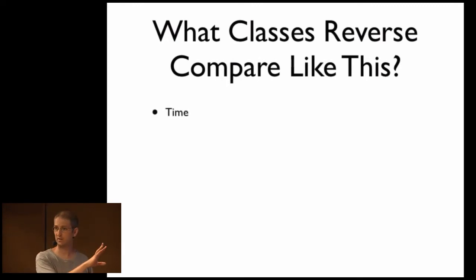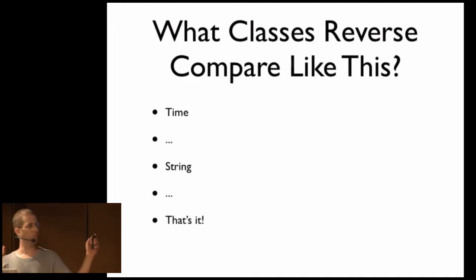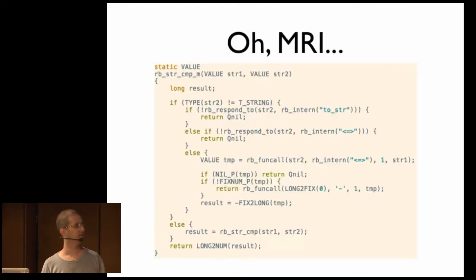Okay, so we know time. We've already seen it. String. String does a reverse comparison. And that's it. Okay, I don't know why those two classes were the only ones chosen to be able to do this reverse comparison, but that's the way it is. But, oh, MRI. Okay, this is String's spaceship operator now.